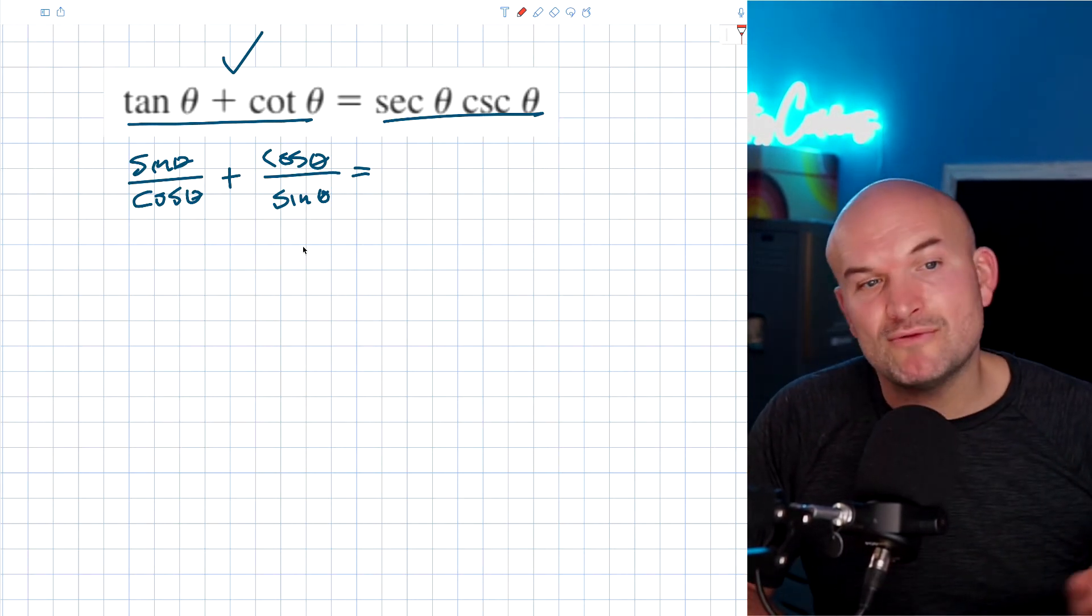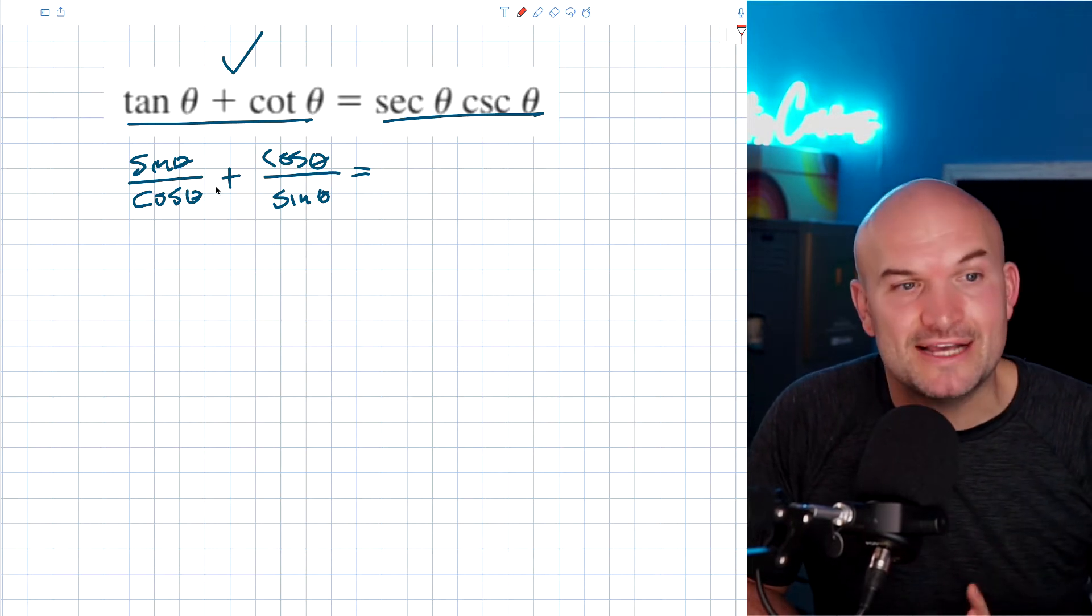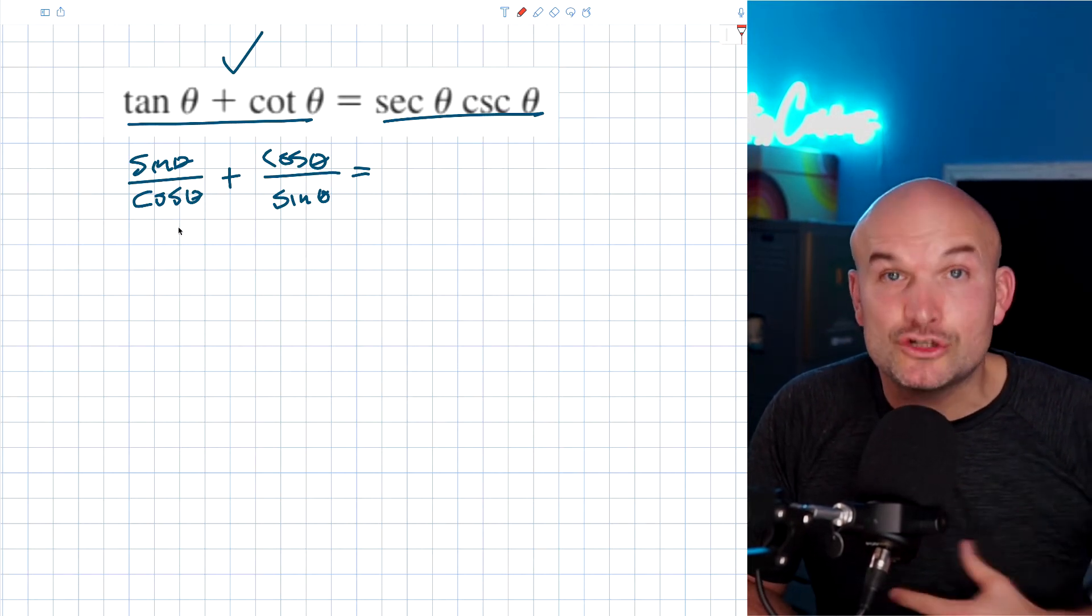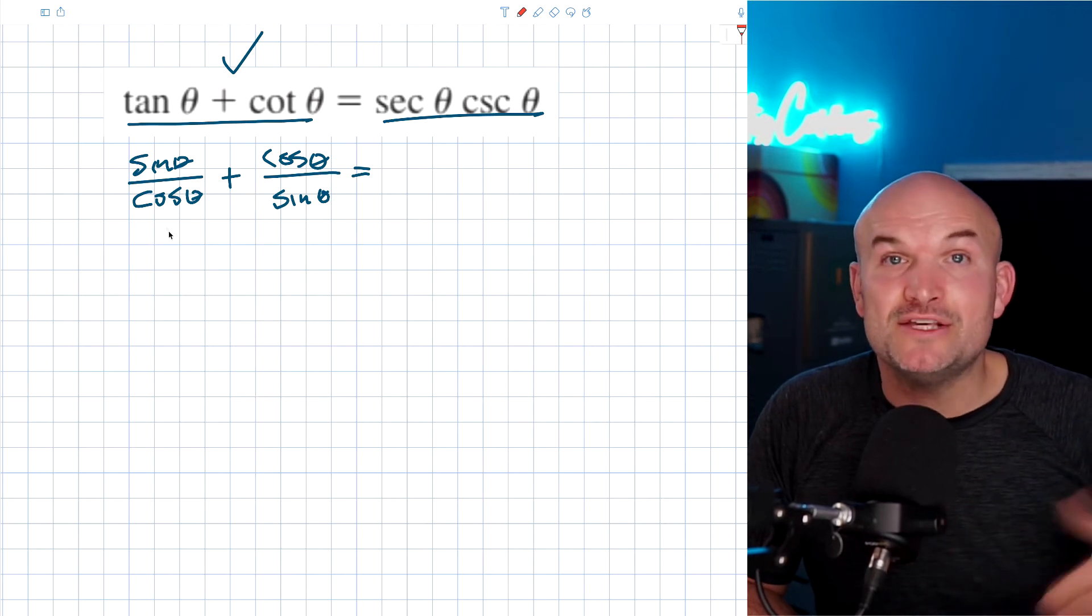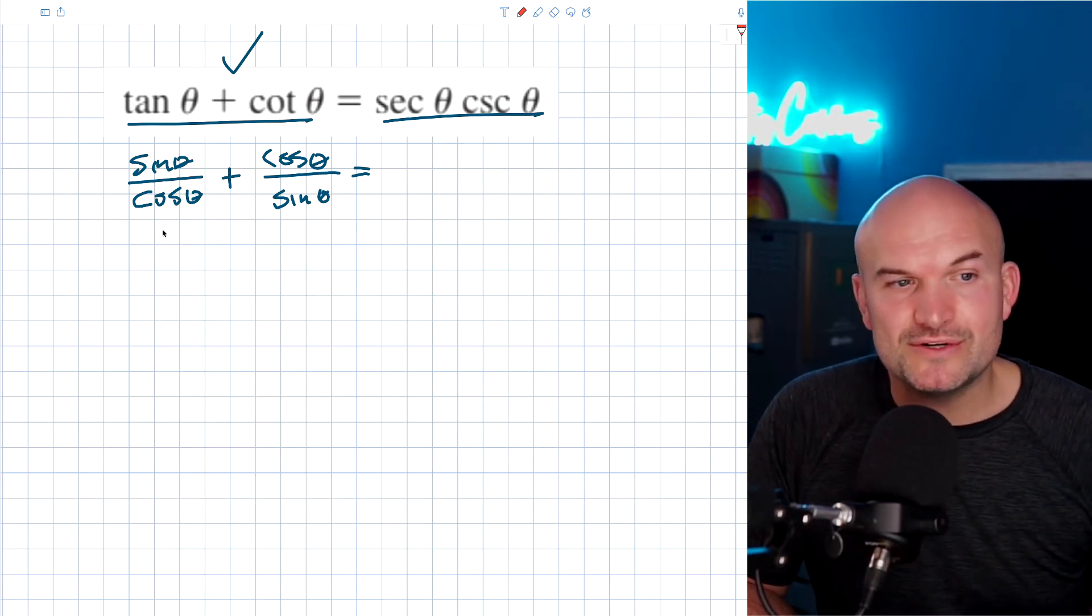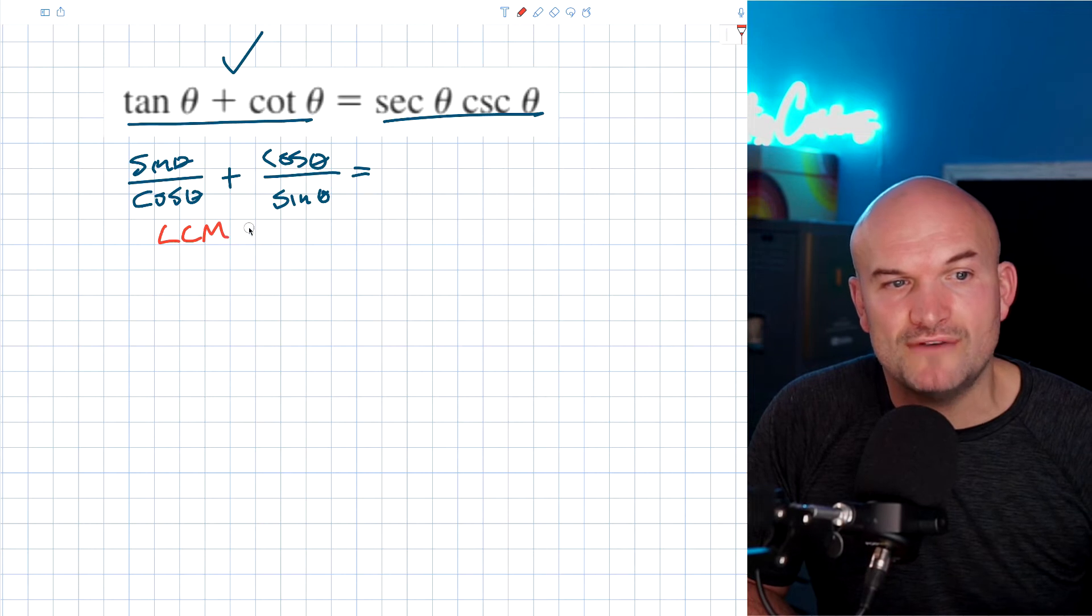However, what's nice about fractions is we can create a common denominator by using scalars. So what we want to do is identify the least common multiple of our denominators.